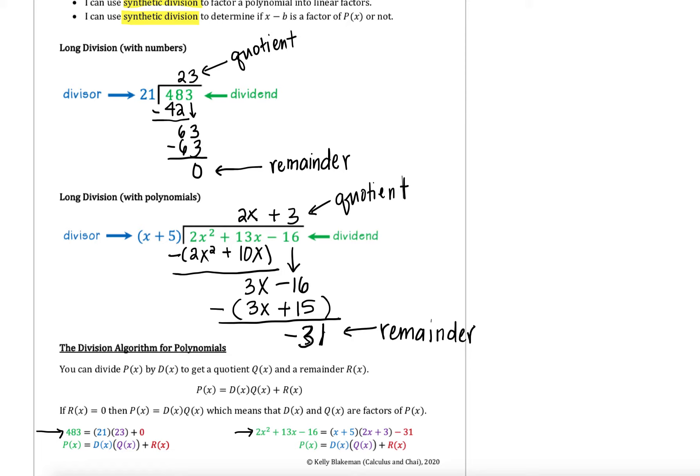The difference between these two examples — not only that the first had numbers and the second has polynomials — is that when we get a remainder equal to 0, something special happens. If our remainder is equal to 0, then p of x is just equal to the divisor times the quotient, since we're adding plus 0. More importantly, what that means is that the divisor and the quotient are what we call factors of our polynomial p of x. In this section, we're interested in figuring out if something is a factor of a polynomial, because our ultimate goal is to factor a polynomial as much as we possibly can.